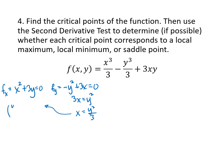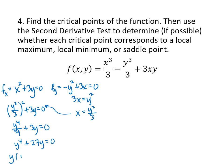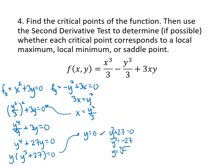Plug that into the other equation: (y squared over 3) squared plus 3y equals 0, which gives y to the fourth divided by 9 plus 3y equals 0. Multiply both sides by 9: y to the fourth plus 27y equals 0. Factor out a y: y times (y cubed plus 27) equals 0. That gives either y equals 0, or y cubed equals negative 27, so y equals negative 3.